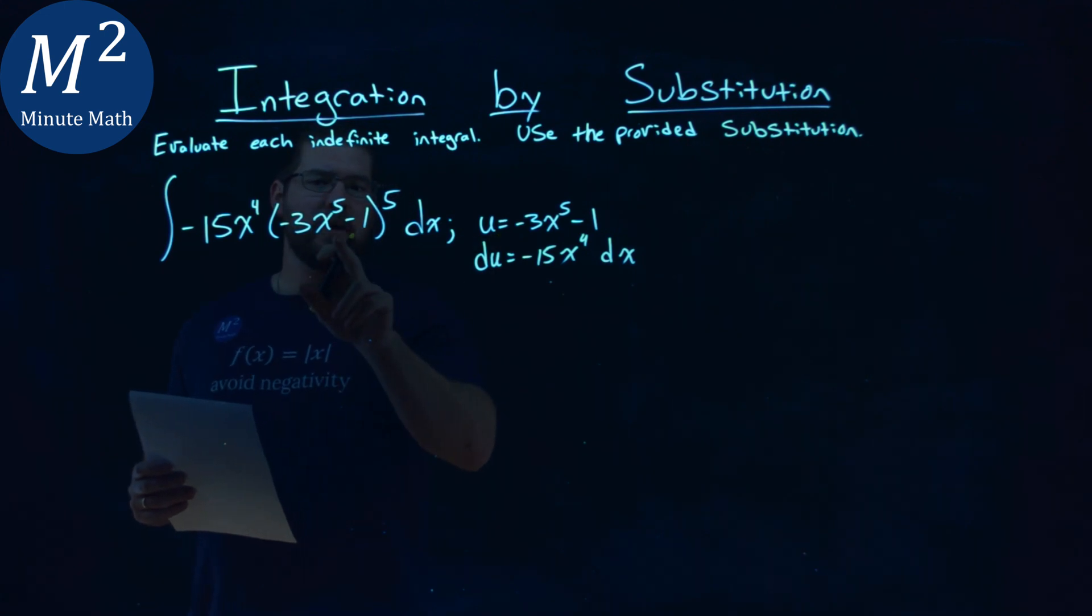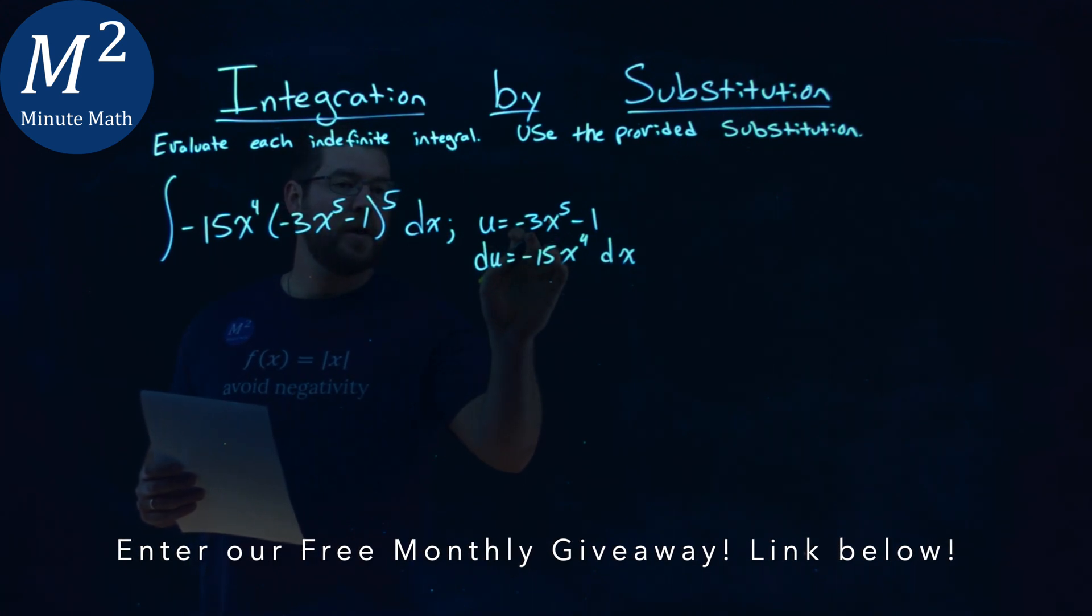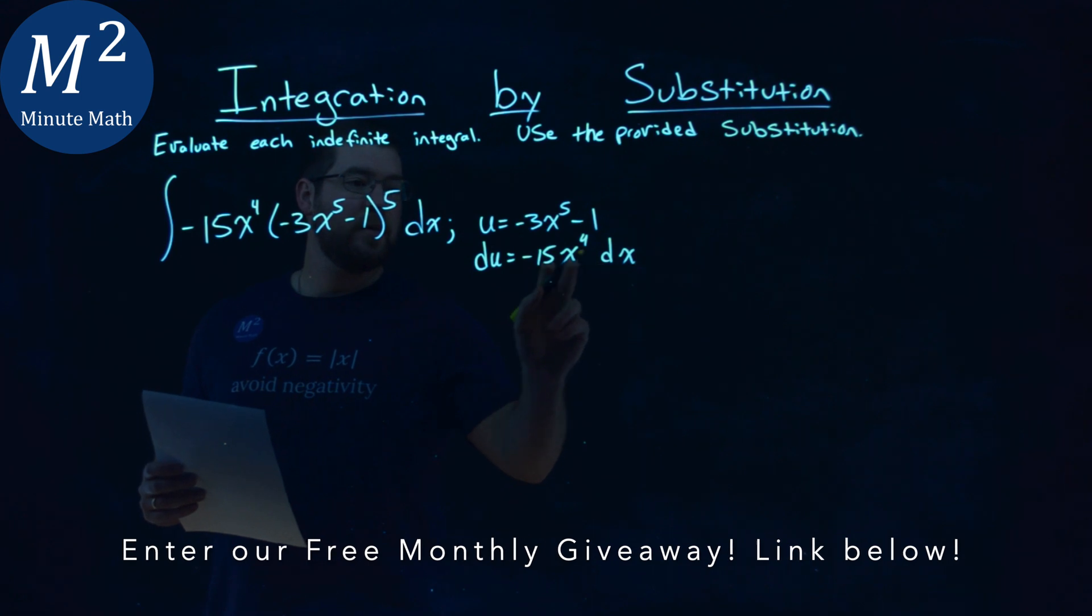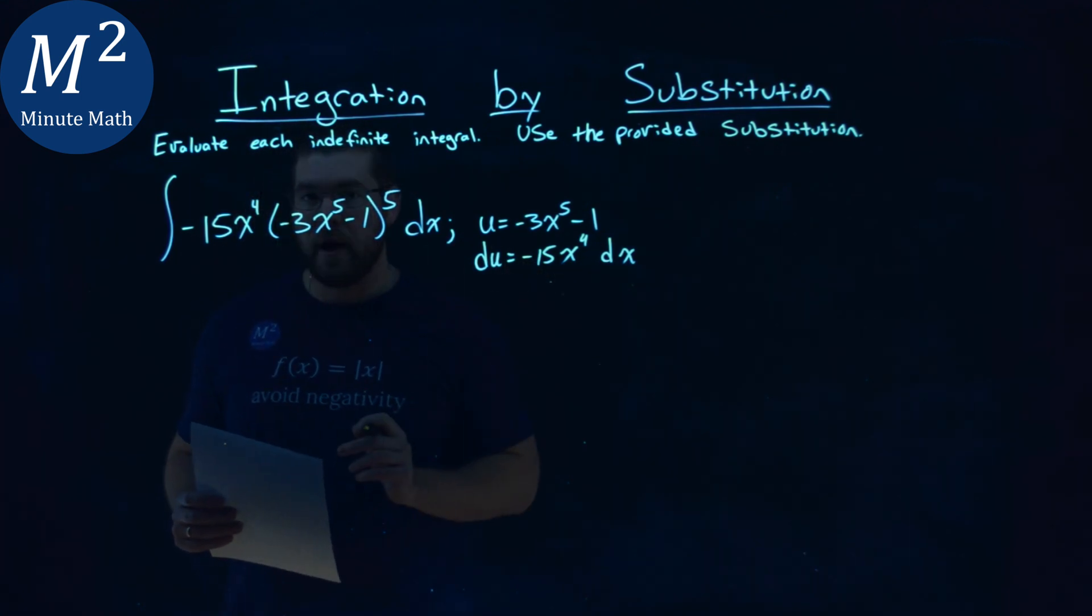Well, notice here, if I have my u value right here, so if I set u to be that negative 3x to the fifth minus 1, which we already have, and then my du is covered by the dx right here, and then negative 15x to the fourth all line up. Okay?